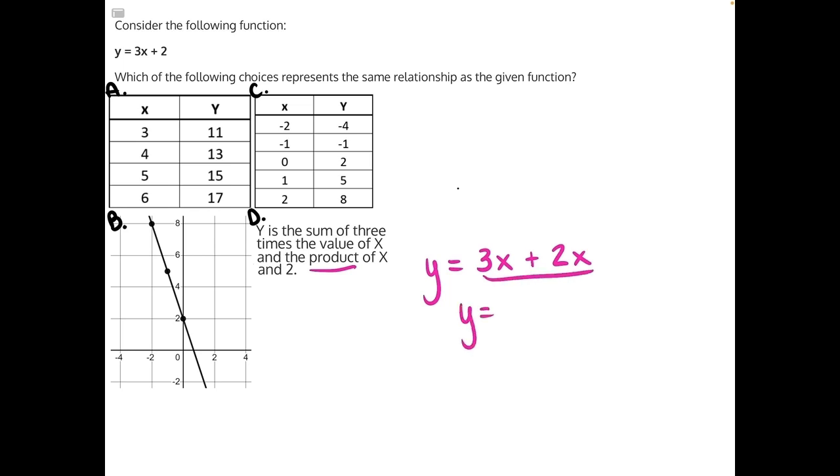When we simplify this, we'll add our like terms. y equals 3x plus 2x would give us 5x. y equals 5x does not match the equation we were given, so answer choice D is incorrect.